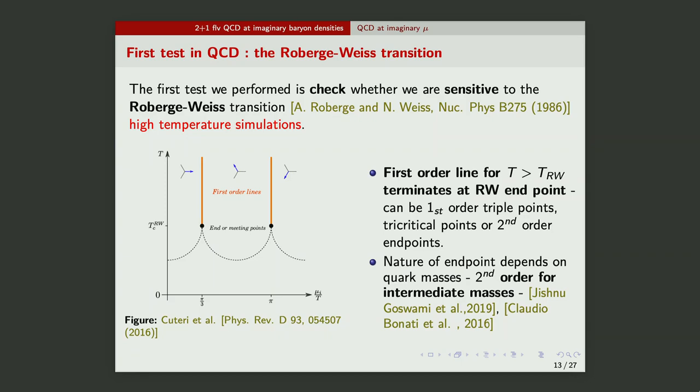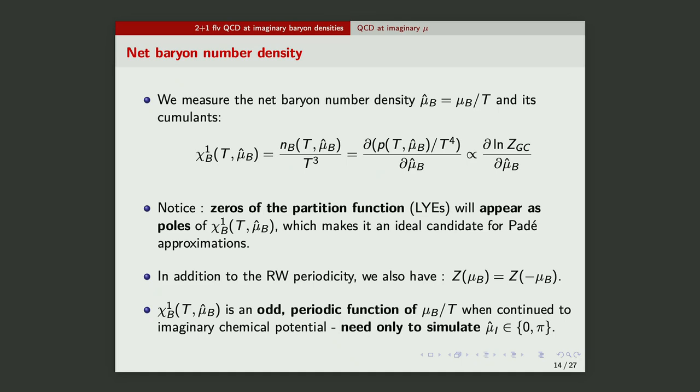As you also saw from Ove's presentation, this point, the universality class of this point is determined by what quark masses you are using. If you use intermediate quark masses, this is expected to be second order, which means this is a crossover, and this is a first order line. So, we are basically, what we do is we do our lattice simulations at low T, and we approach T_RW, which, from this paper, we have an estimate for the exact lattice that we are using. The observable that we will approximate using the rational function is number density. Why? Because of some very nice symmetry properties of Z in the complex, in the imaginary mu plane.